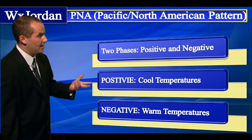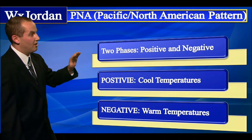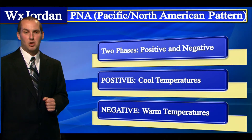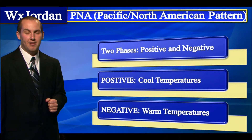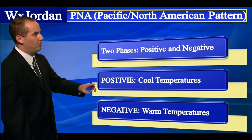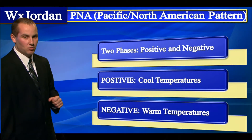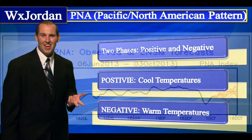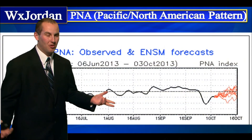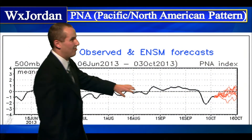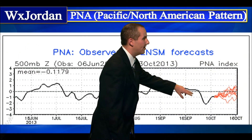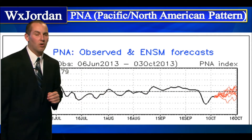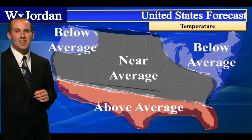And the PNA — this is another oscillation that we cannot forecast much more than a week in advance. A positive phase means we have cooler temperatures; a negative phase means we have warmer temperatures. And just like the NAO, we really can't forecast it much more than a week in advance.